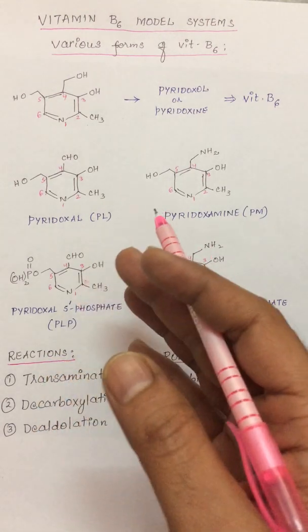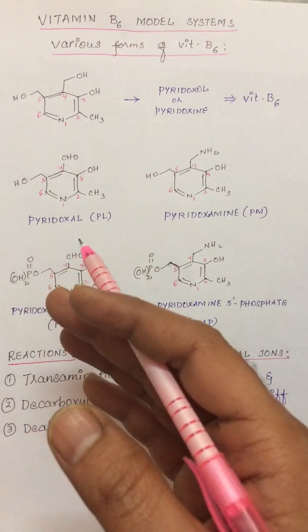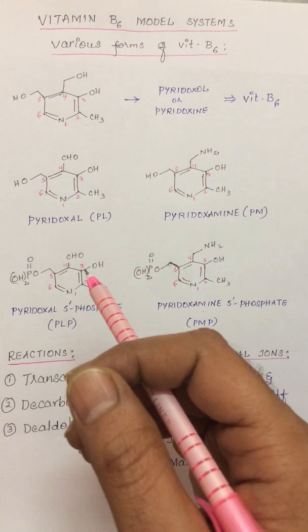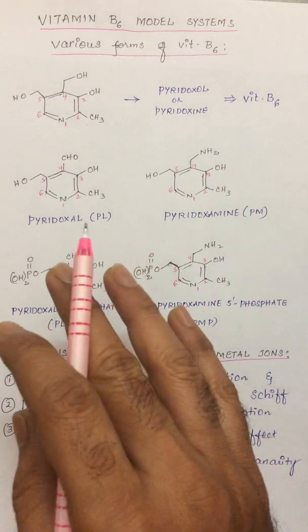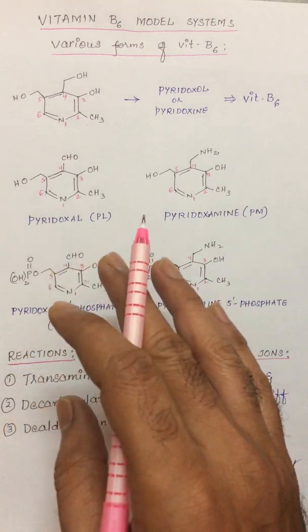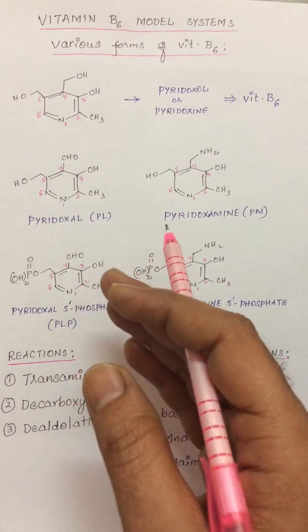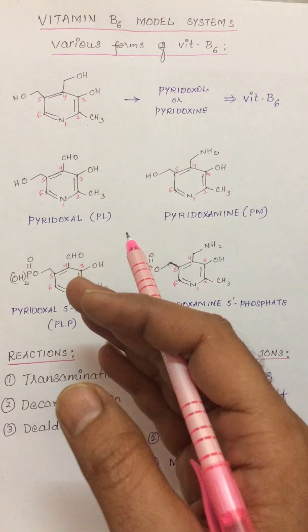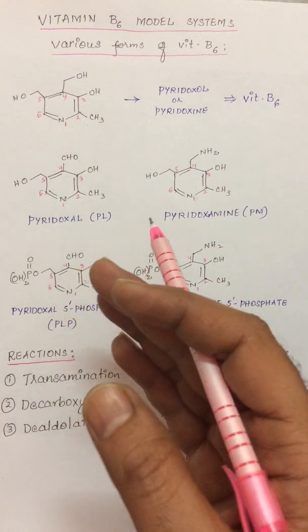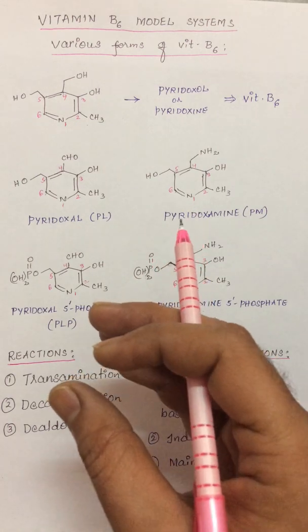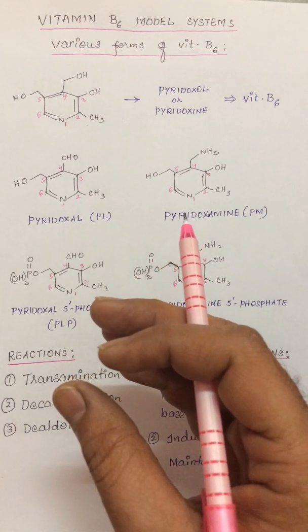For example, if serine is taken, serine can undergo transamination, racemization, decarboxylation, and also beta eliminations to a varying extent. Pyridoxal is non-specific in its catalytic action in the model systems, but in vivo studies, since enzymes are present, these enzymes catalyze the reactions and the specificity is very, very high.